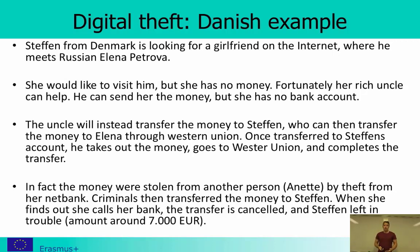Stefan is waiting for the money to arrive in his account, and when it does he goes to the bank, takes out the money, and transfers them to Elena. What he doesn't know is that the money are actually stolen from another Danish person, Anette, by theft from her net bank. The criminals transferred the money from Anette's account to Stefan's account — a traceable transaction — and then Stefan took out the money and transferred them to Elena in Russia via the non-traceable Western Union. Stefan never sees his money again.